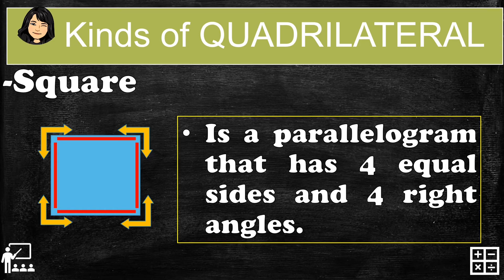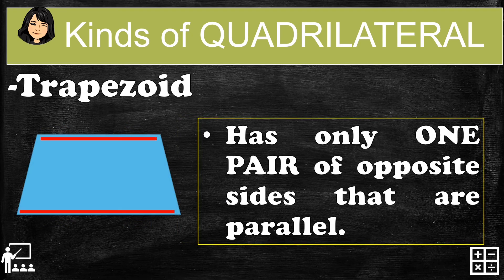And the last is the trapezoid. A trapezoid has only one pair of opposite sides that are parallel. The top and the bottom part are that one pair of parallel sides. The left and right sides are not parallel because if you extend them, they will intersect each other, so they cannot be parallel lines.